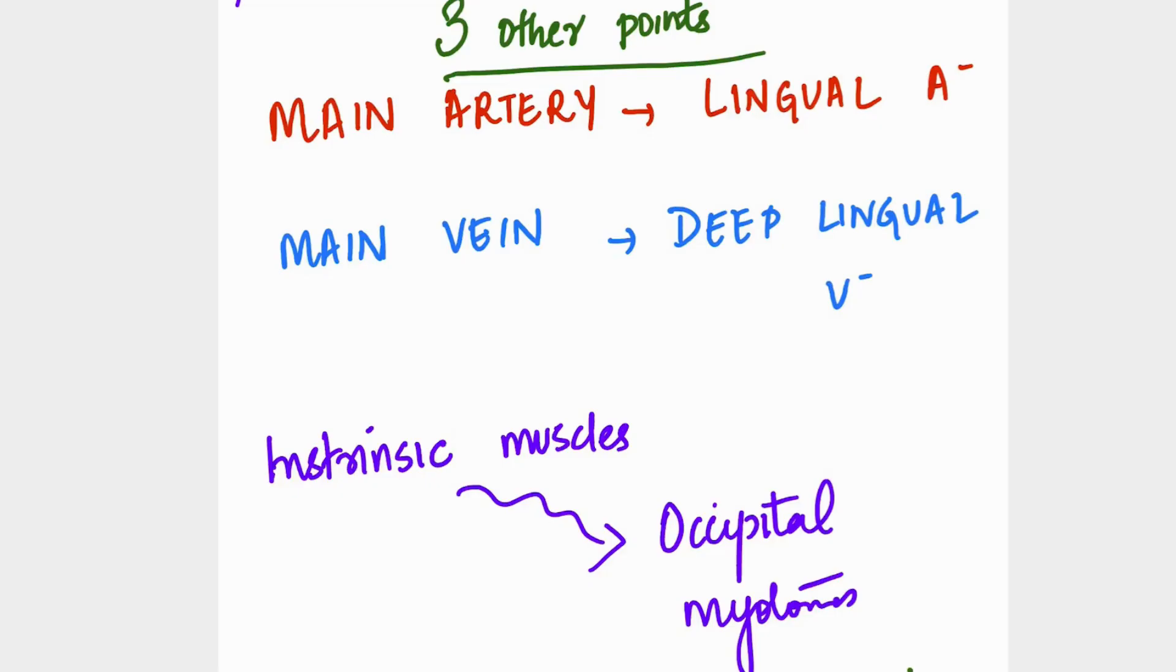I have three other points I want you to know. First, the main artery of the tongue is the lingual artery. Main vein is the deep lingual vein. Intrinsic muscles are derived from the occipital myotomes.